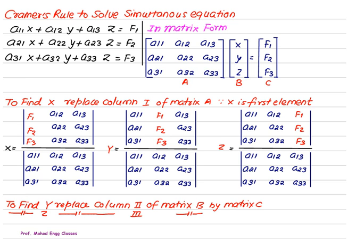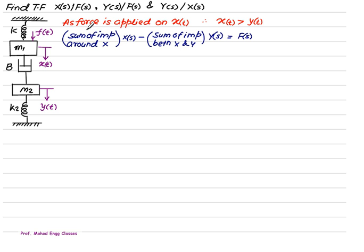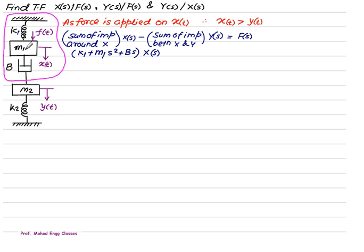Consider a two-mass system with masses m1 and m2. A force f(t) is acting on x(t). m1 is connected between spring k1 and damper b, and m2 is connected between damper b and spring k2. Since the force is applied on x(t), x(t) will be greater than y(t). So the first element in the matrix is x(s) and the second is y(s). According to the impedance method, the sum of impedances around x multiplied by x(s) minus the sum of impedances between x and y multiplied by y(s) equals the Laplace transform f(s). When writing the sum of impedances around x, x is connected to mass m1, k1, and b.